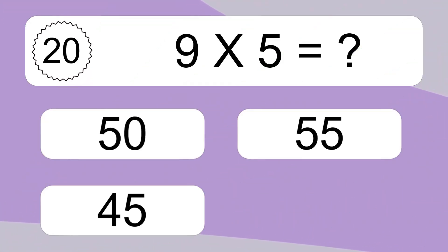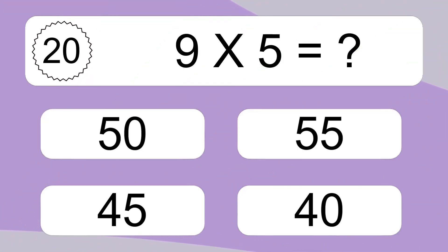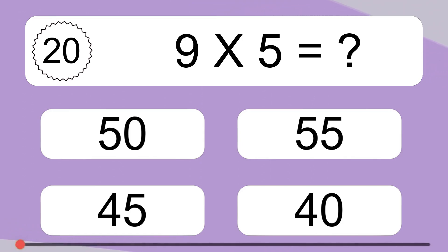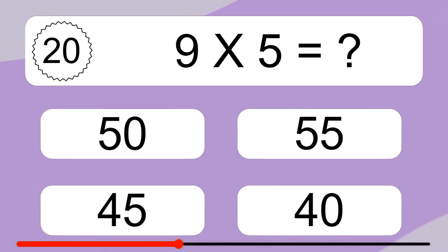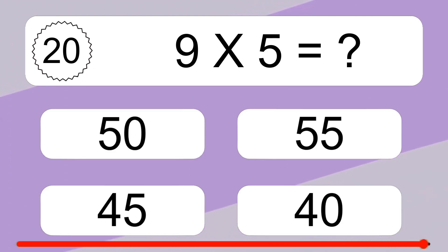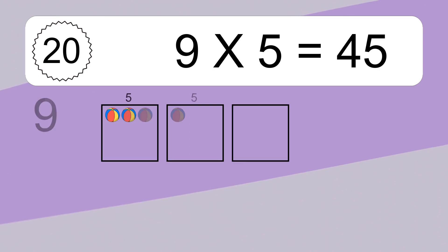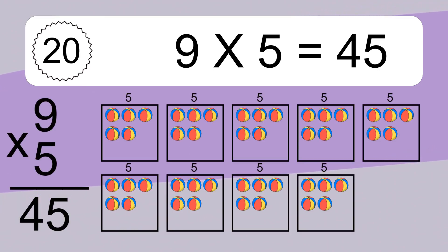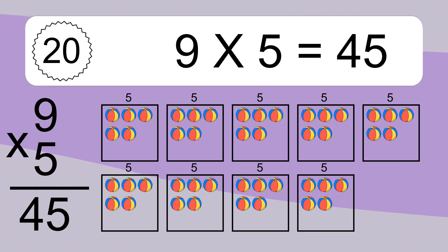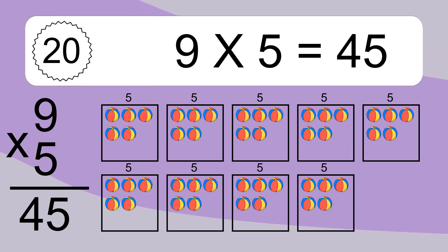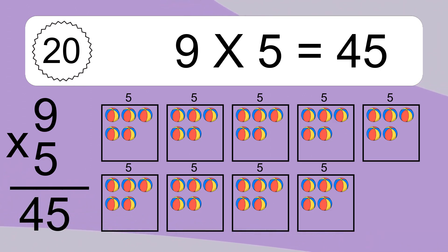Nine times five equals what? Nine times five equals forty-five. We have nine boxes, and each box has five colorful balls inside. If you count all the balls in all the boxes together, you will have nine times five balls. This equals forty-five balls.